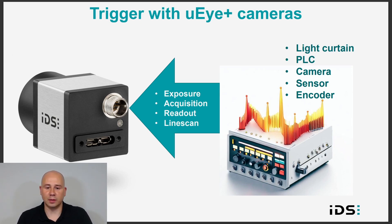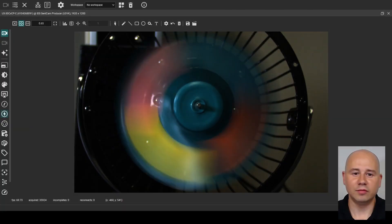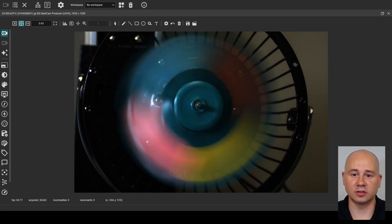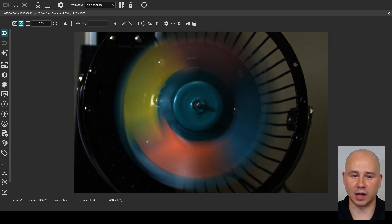In the following example, I will demonstrate how to set up a global shutter camera for trigger timed exposure with a digital signal generator as the trigger input. Trigger timed exposure is a great feature that is available on IDS global shutter sensors in which the exposure time is based on the width of the trigger pulse. I have the camera opened in IDS Peak Cockpit, where I will configure the camera parameters to capture an image where the exposure time is based on the duration of the trigger signal.